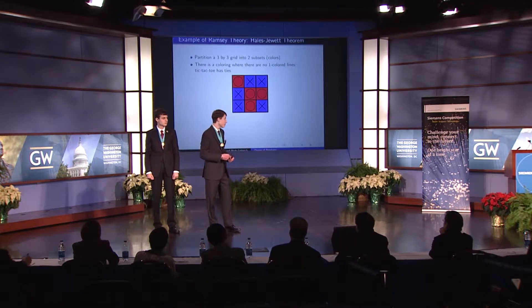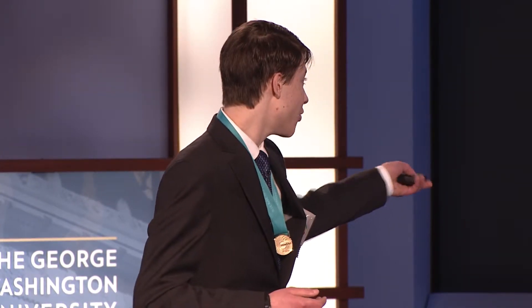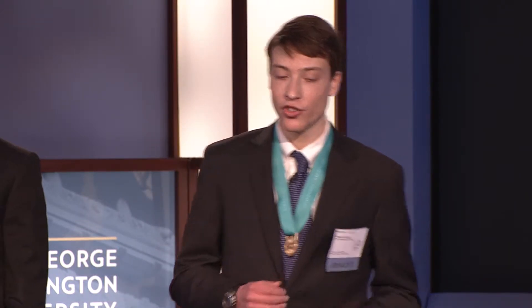A simple example of Ramsey theory is the game where you take a 3x3 grid and partition it into two subsets or colors. This game is more commonly known as tic-tac-toe. One problem with tic-tac-toe is that there is a coloring of this 3x3 grid where there are no one-colored lines — in other words, tic-tac-toe has ties, and an example of a tie is shown here. It turns out that if you extend a 3x3 grid to a four-dimensional 3x3x3x3 grid, then no matter how you color it with two colors, you will always have a one-colored line in that hypercube.